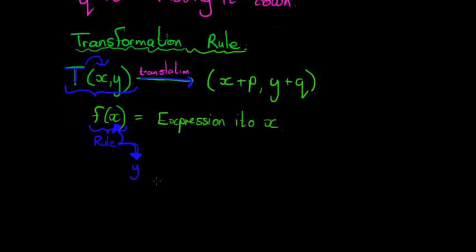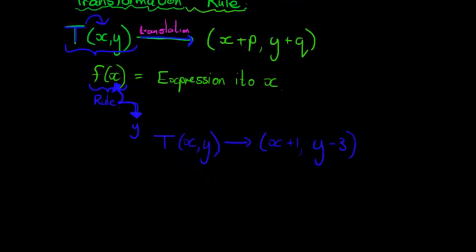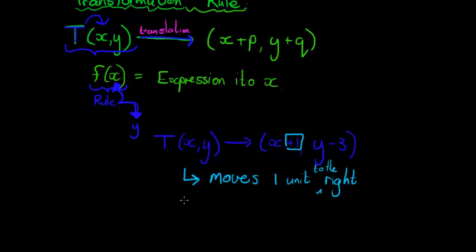Let me give you an example of a transformation rule that is a translation. T(x,y) is translated to (x+1, y-3). Now looking at this transformation rule, I can tell you exactly what happened to every coordinate that this transformation is being applied to. It moves one unit to the right, and it moves three units downwards.